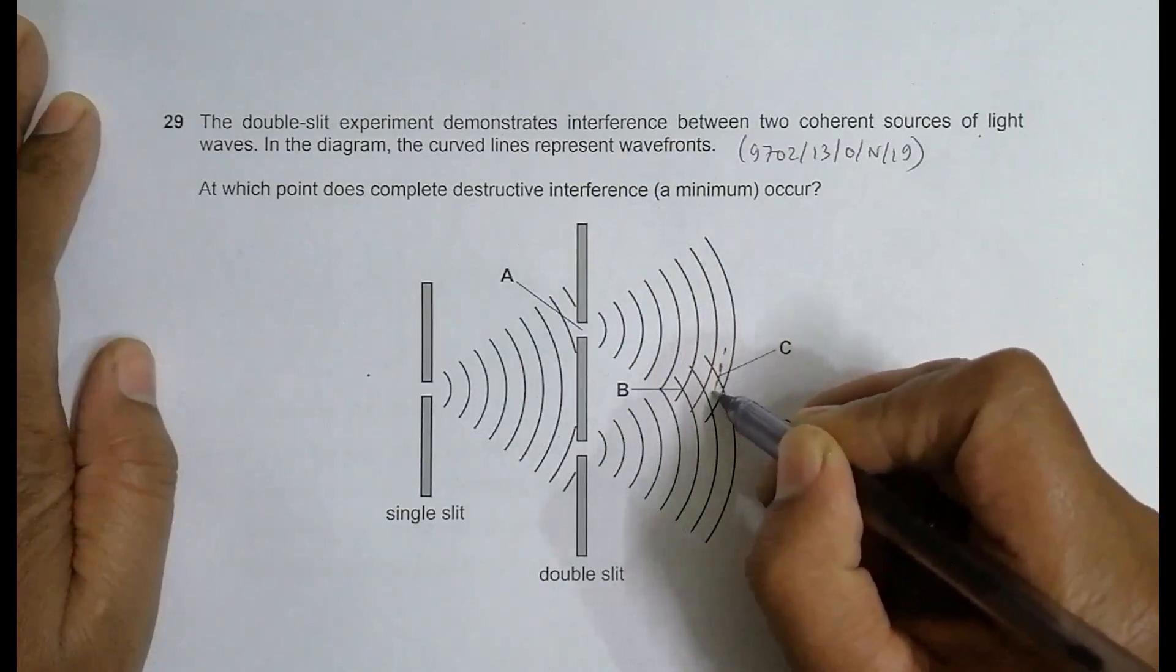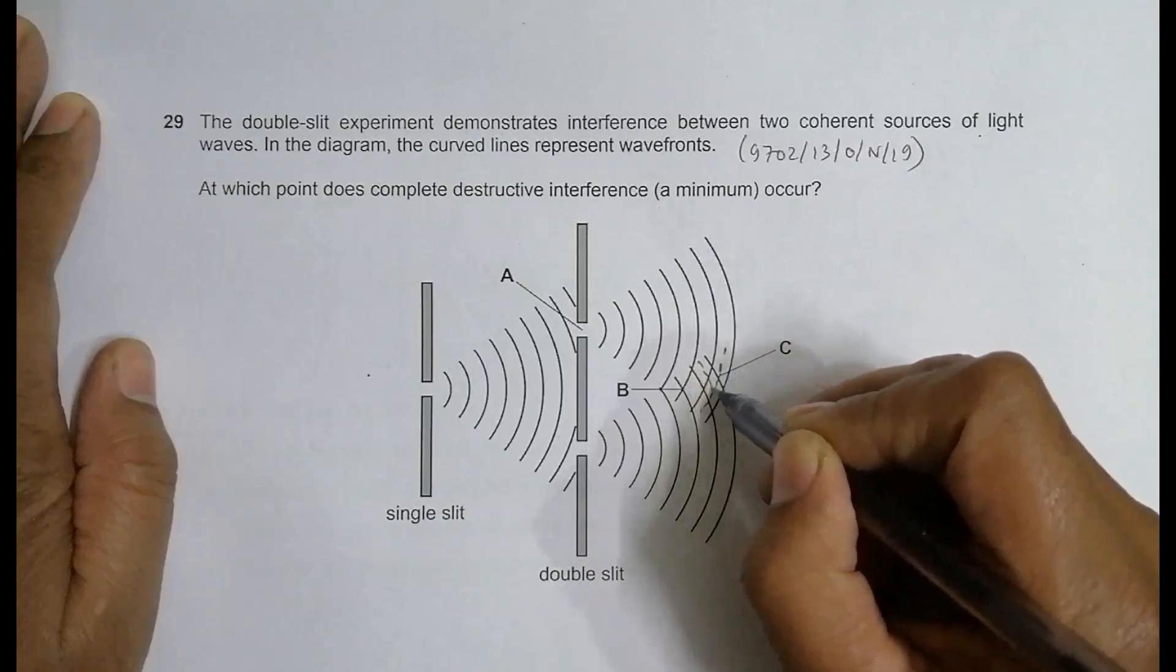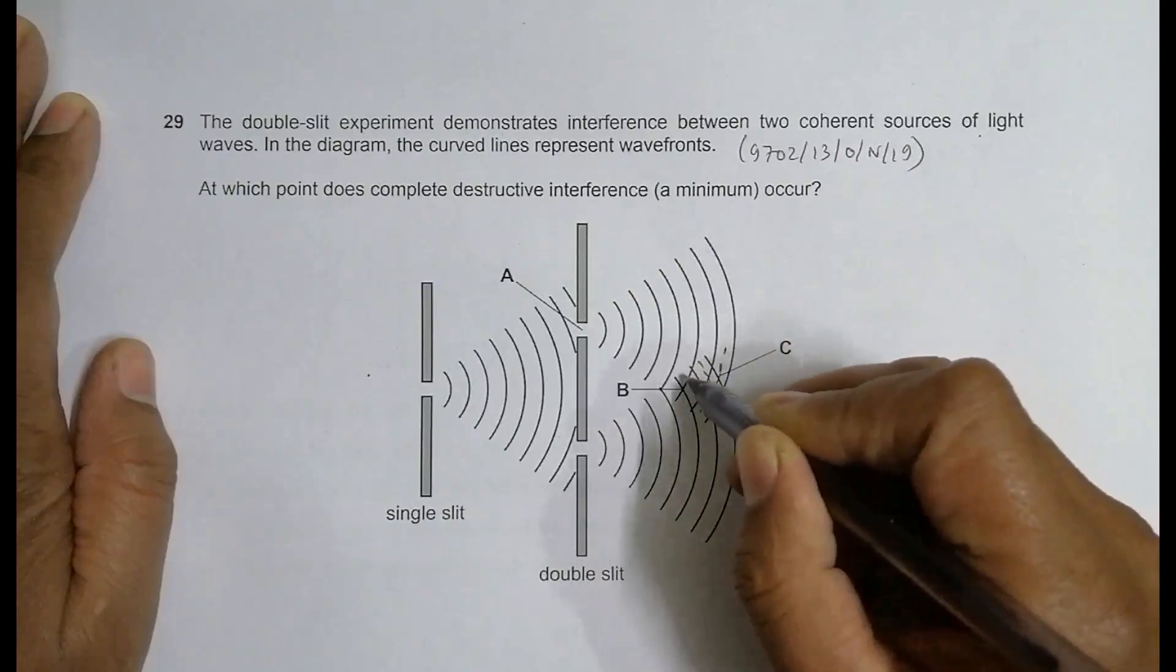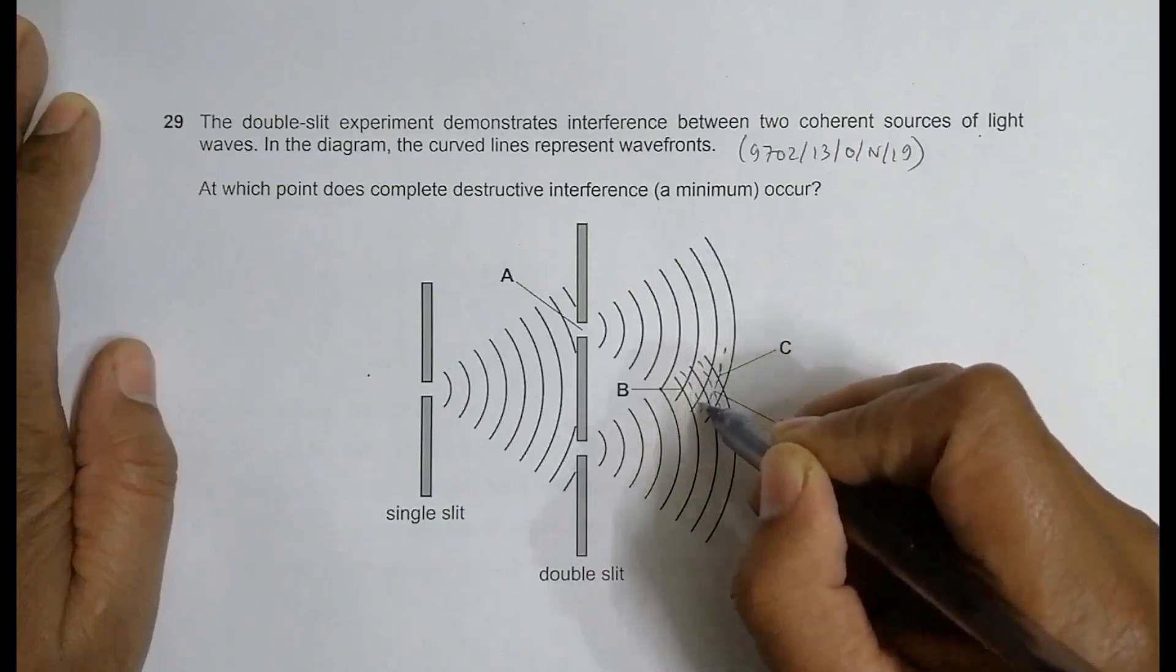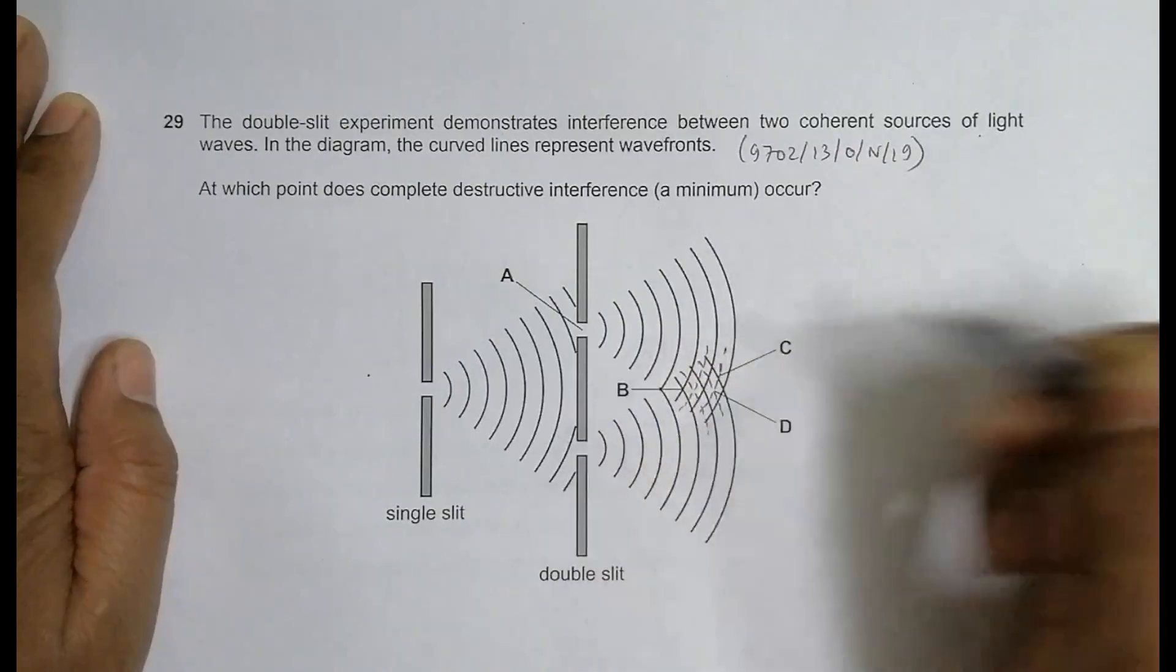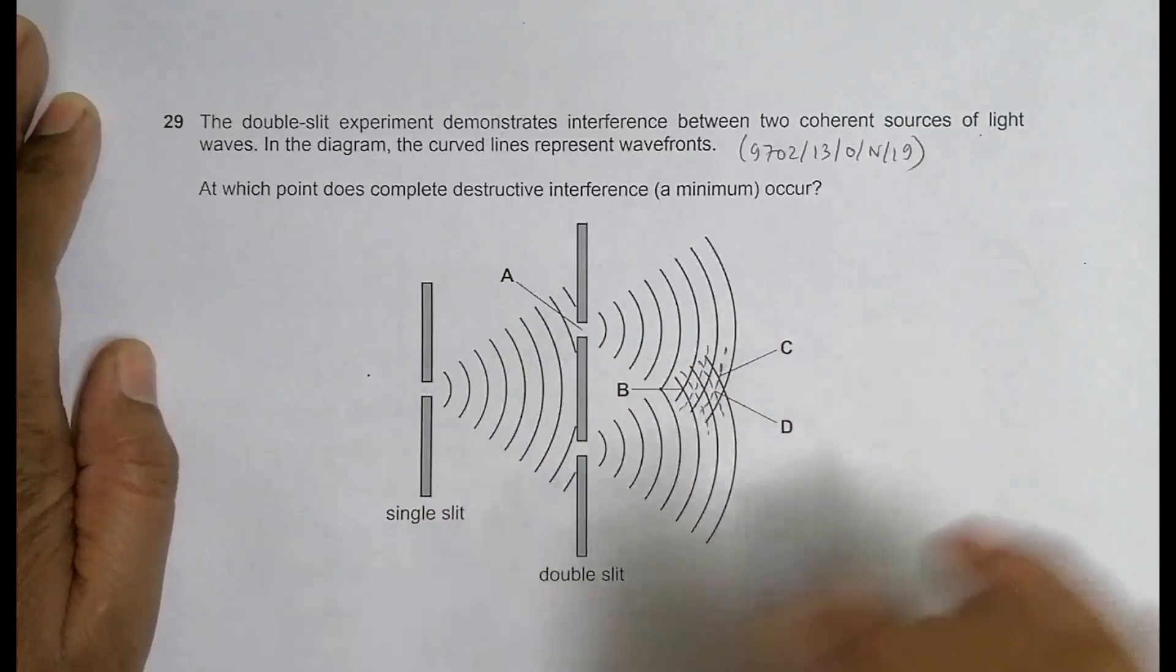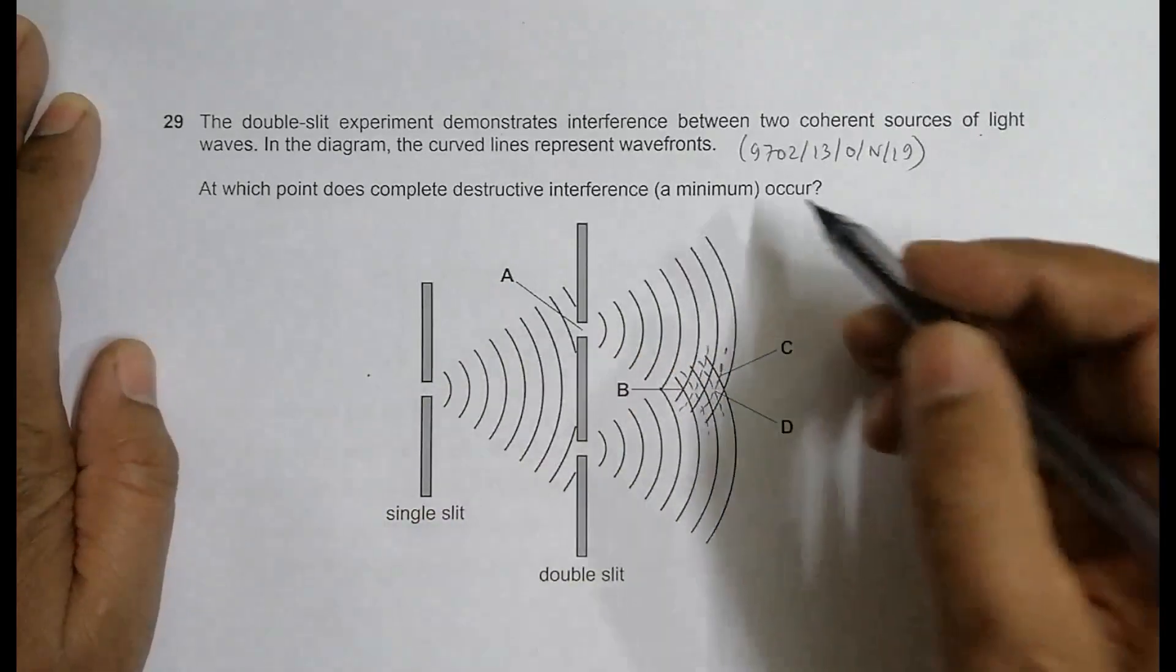We have troughs like this. Here we have a trough, crest, trough, crest. These are trough parts and this also belongs to trough. We can draw this pattern throughout.